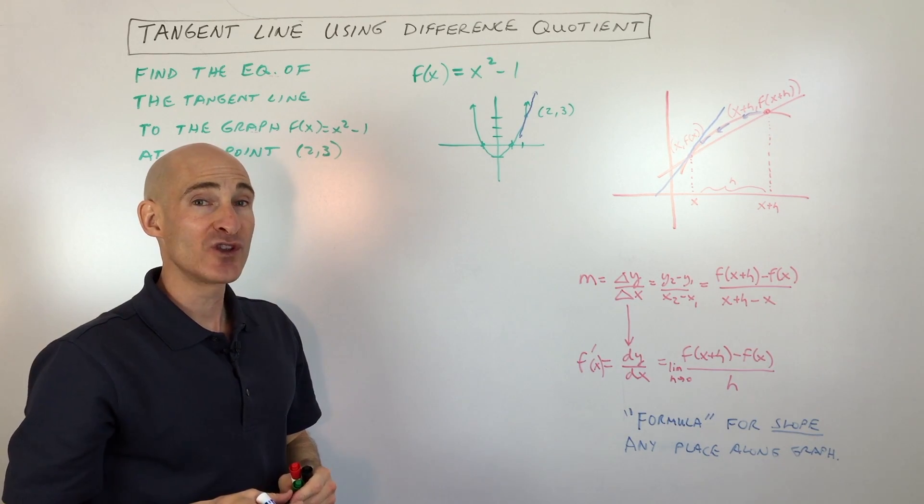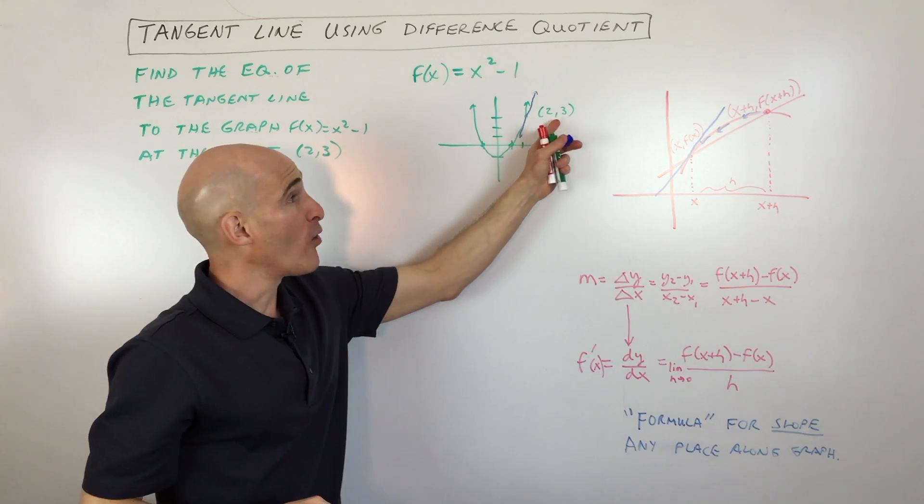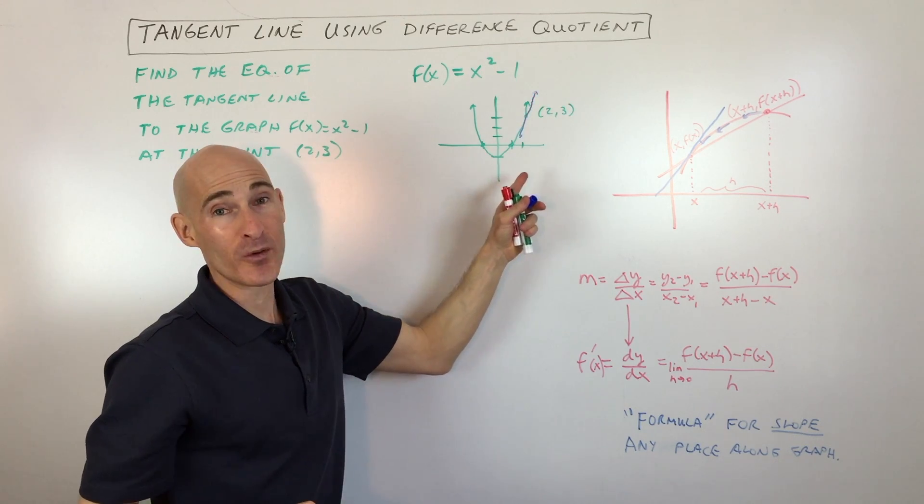Now when you find the equation of a line, what do you need? You need a point, right, and you need a slope.